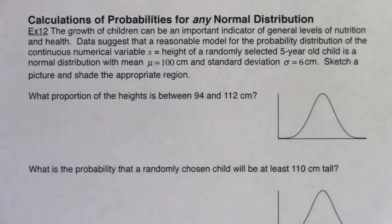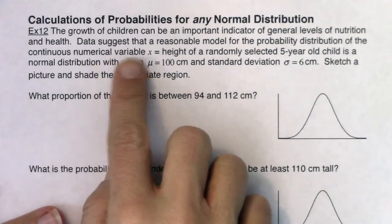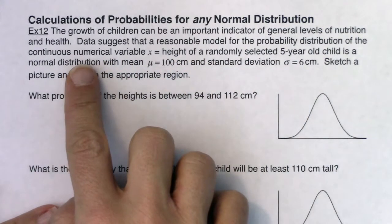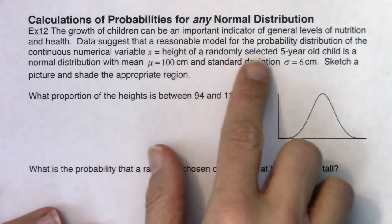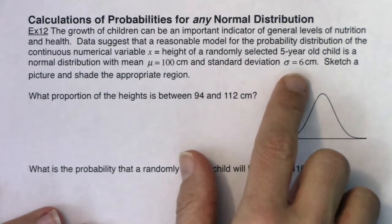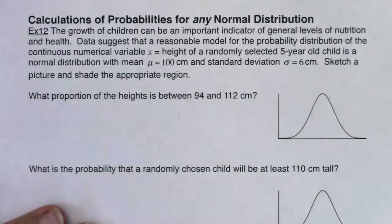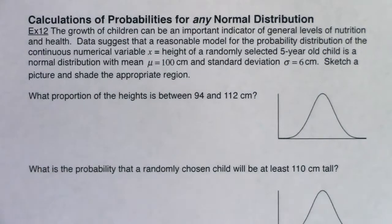Let's calculate probabilities for any normal distribution, not just z-scores on the standard normal. The growth of children can be an important indicator of nutrition and health. Data suggests a reasonable model for the continuous numerical variable x — the height of a randomly selected five-year-old child — is a normal distribution with a mean of 100 centimeters and a standard deviation of six centimeters. What is the proportion of heights between 94 and 112 centimeters?